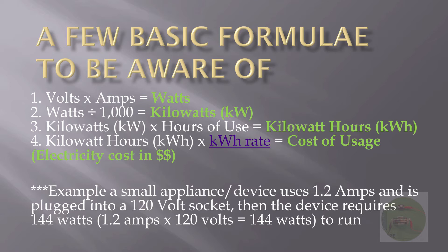Now you have to take the kilowatts and multiply it by the number of hours that you plan to use a particular device. For instance, if you have a television on for eight hours per day, then you would multiply the kilowatts times the number of hours, and that will give you the kilowatt hours.